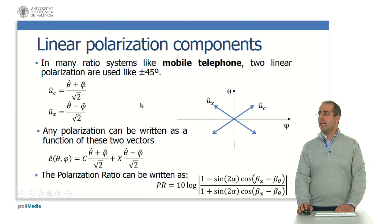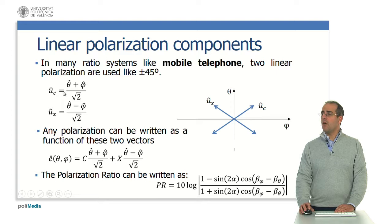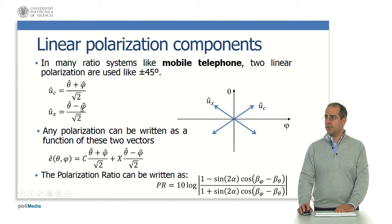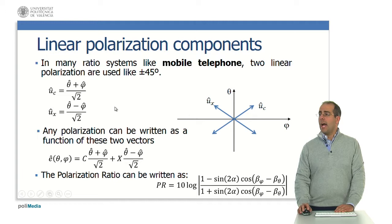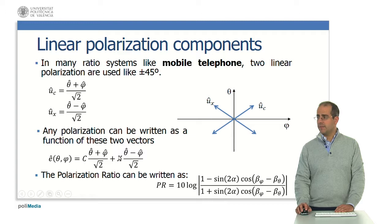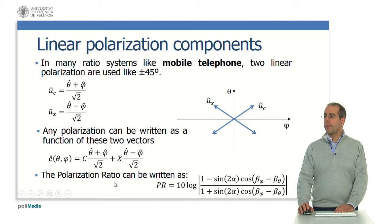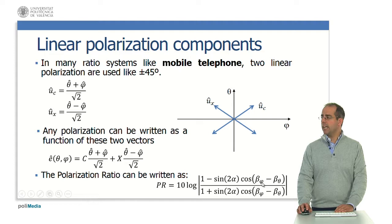In many radio systems like mobile telephones, two linear polarizations are used, such as ±45 degrees. Here we have the definition of the copolar unit vector and the cross-polar unit vector, considering the plus-45-degree polarization as reference. Any polarization can be written as a function of these two vectors. We can define the copolar component and the cross-polar component, and the polarization ratio for this linear polarization can be defined in terms of the real parameters alpha, beta-phi, and beta-theta.